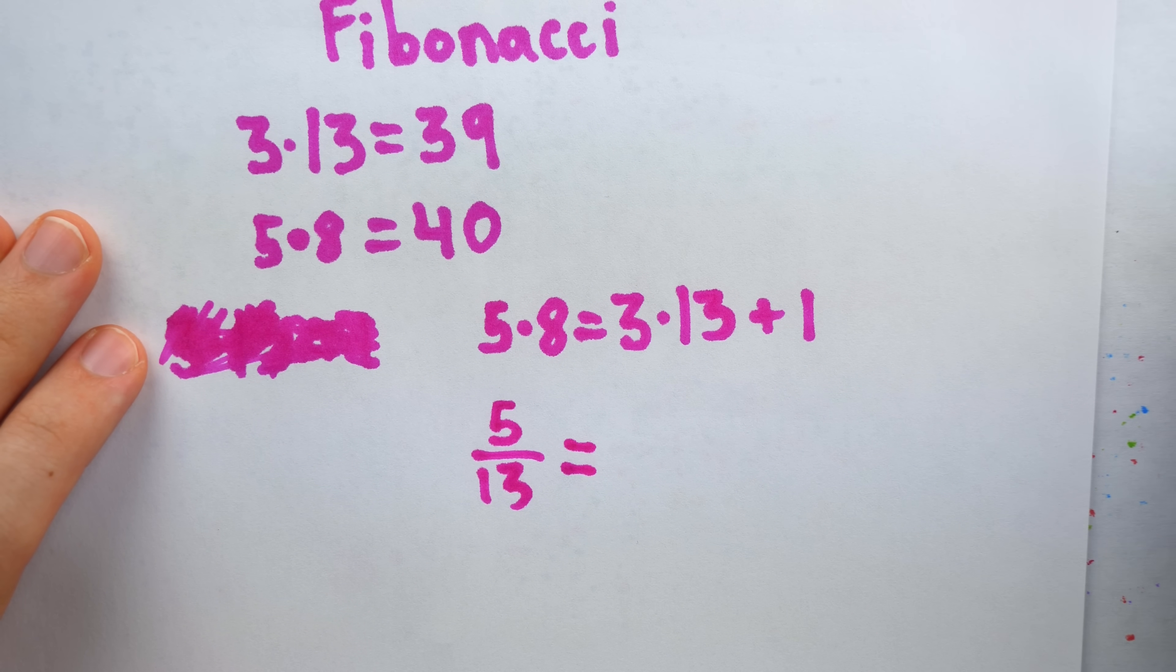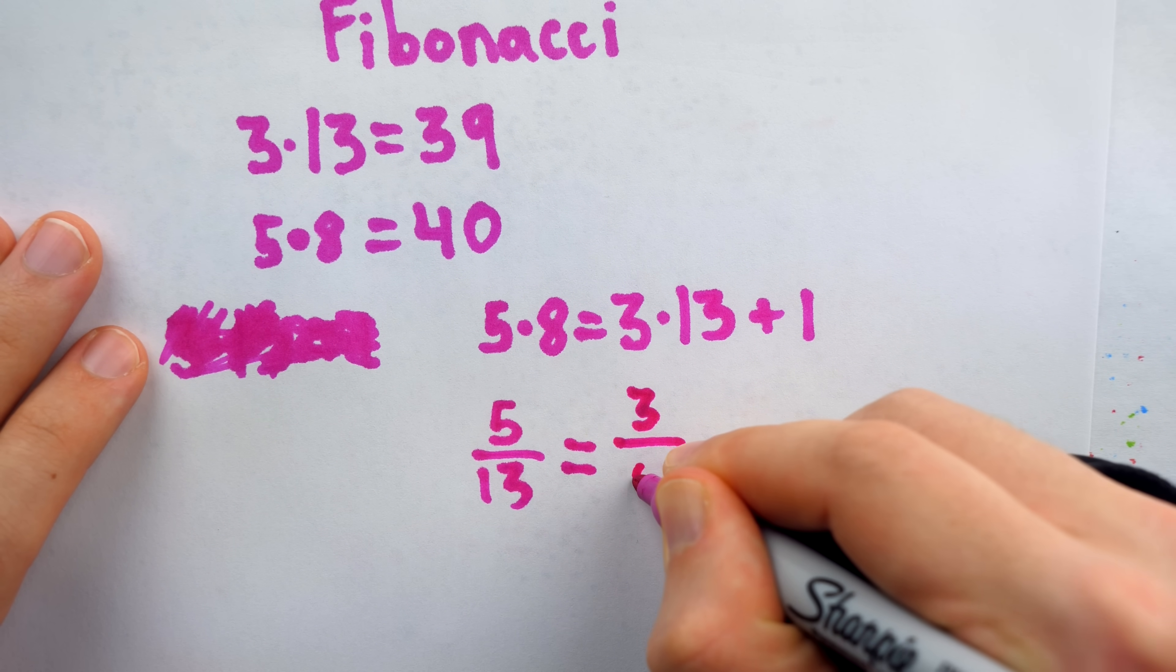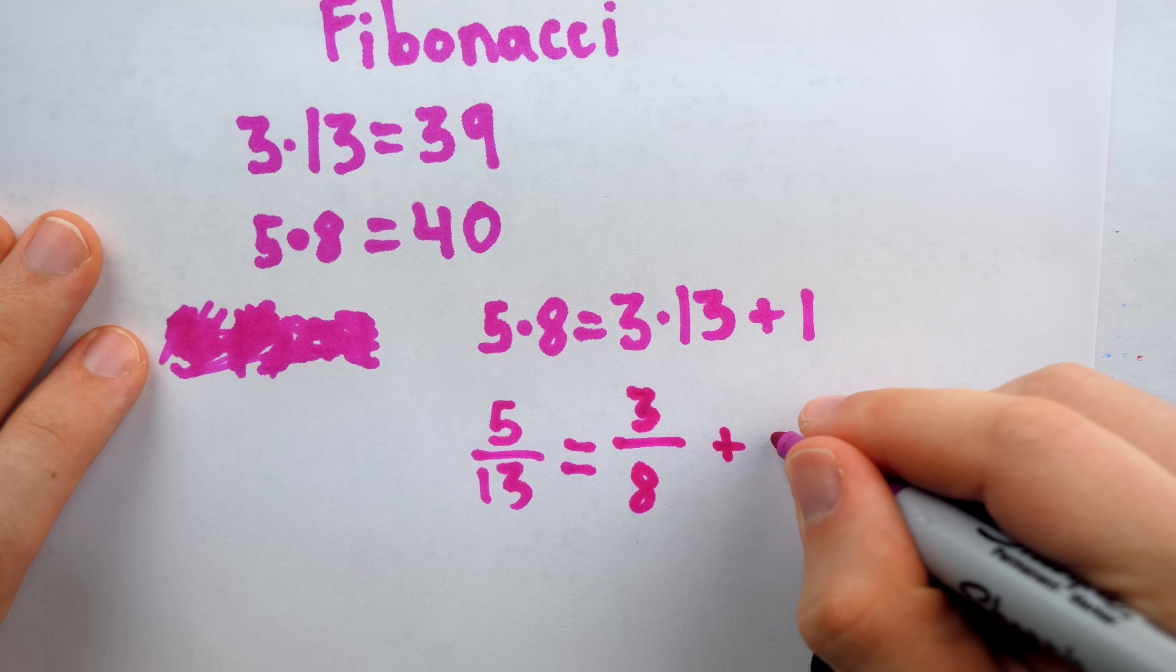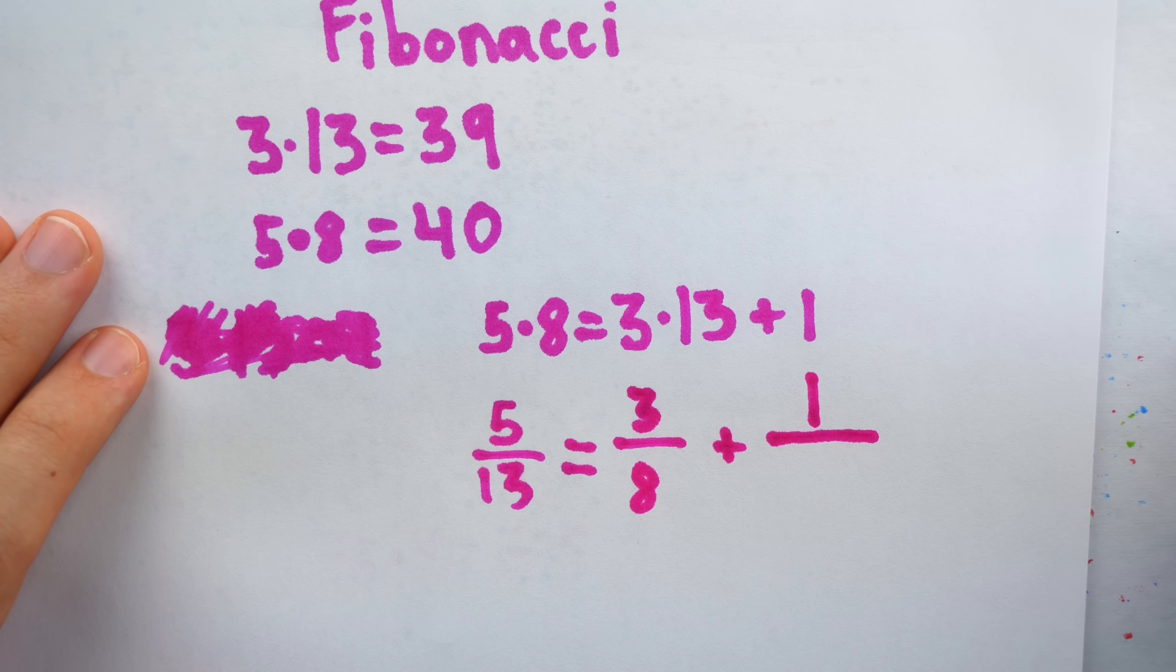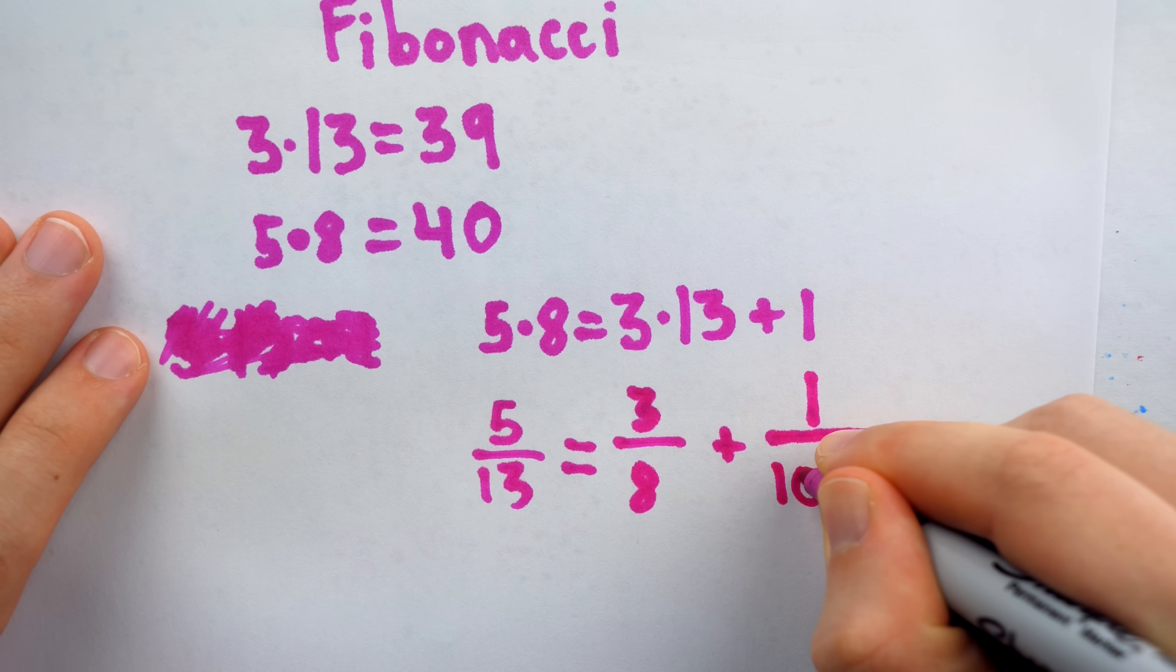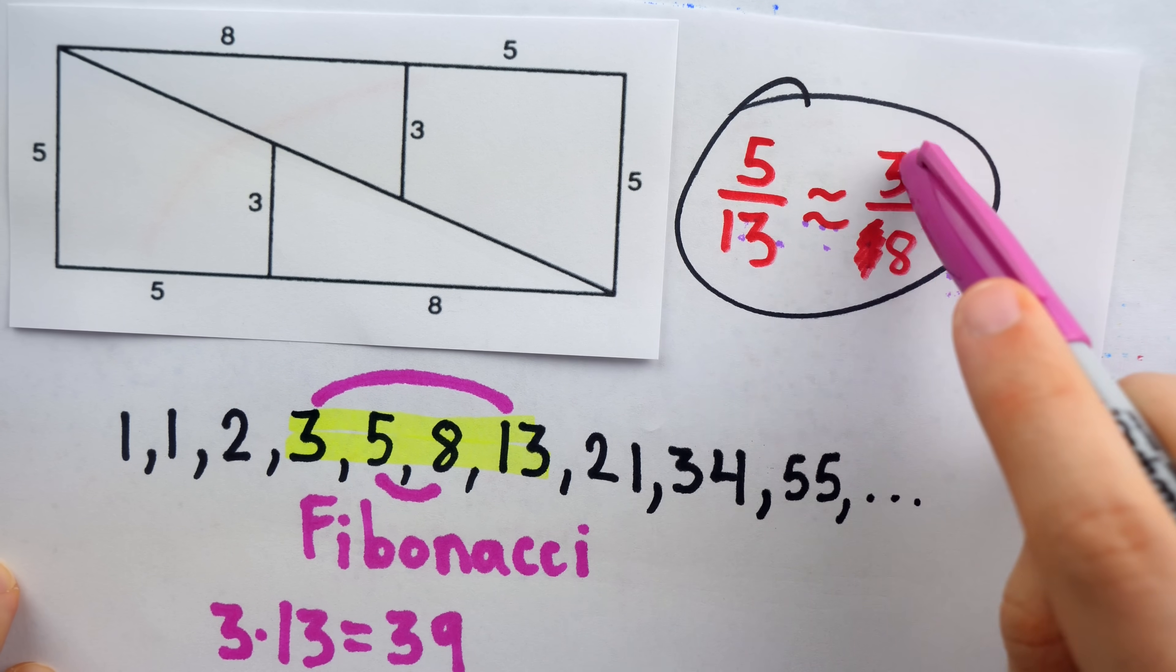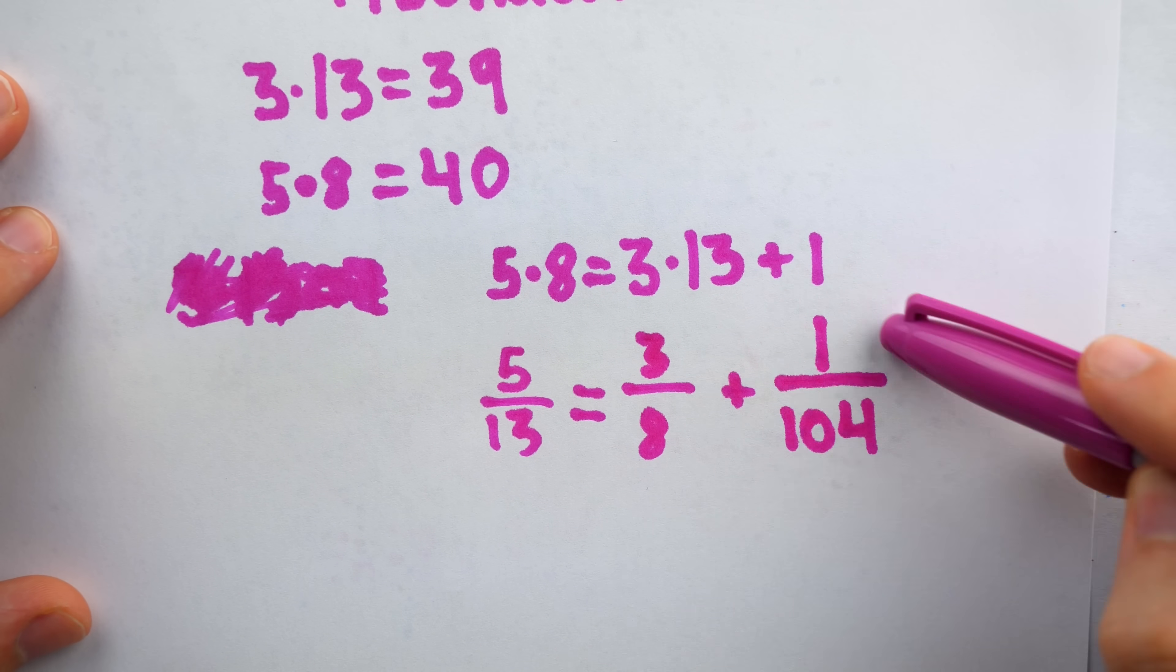And on the right, because we're dividing by 8 and 13, we're going to have 3 over 8. The 13 was divided out. But then the 1 is getting divided by both of those things as well, the 8 and the 13. Dividing by 8 and 13 is dividing by 104. And so we see, yes, these slopes are really close. They're only off by 1 over 104.